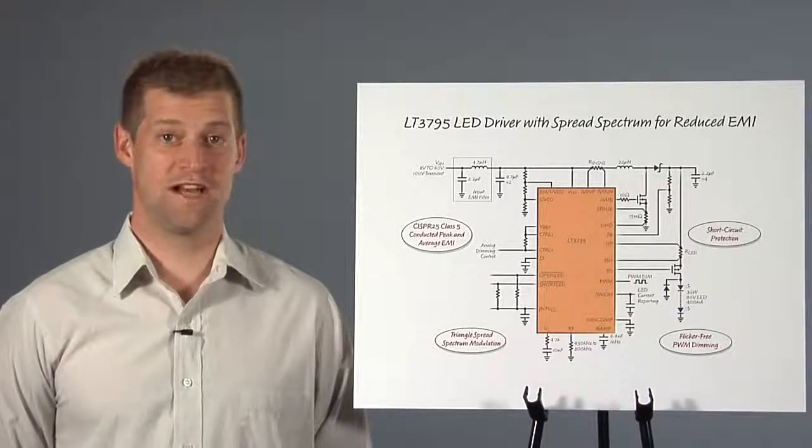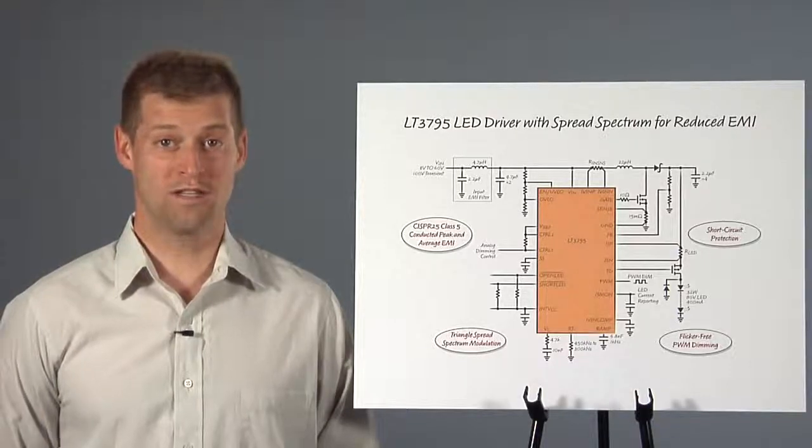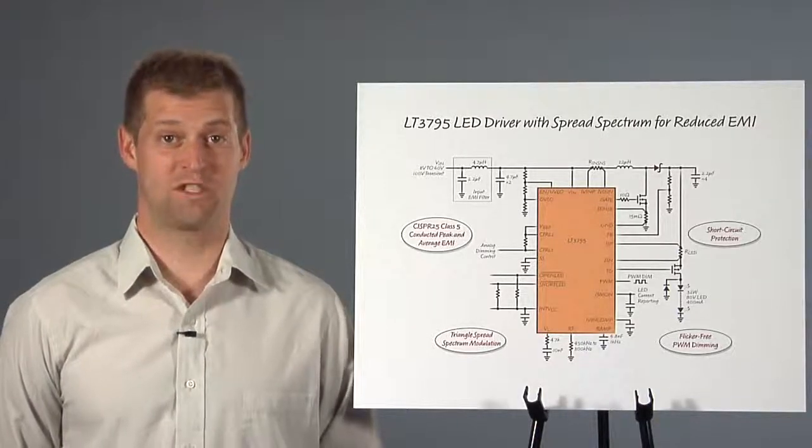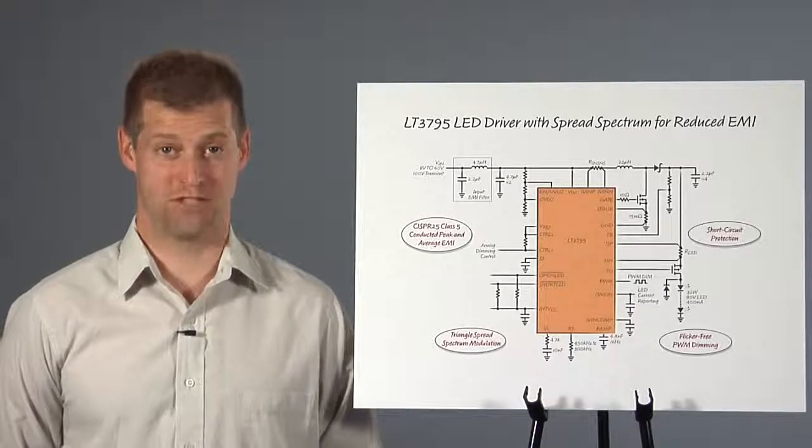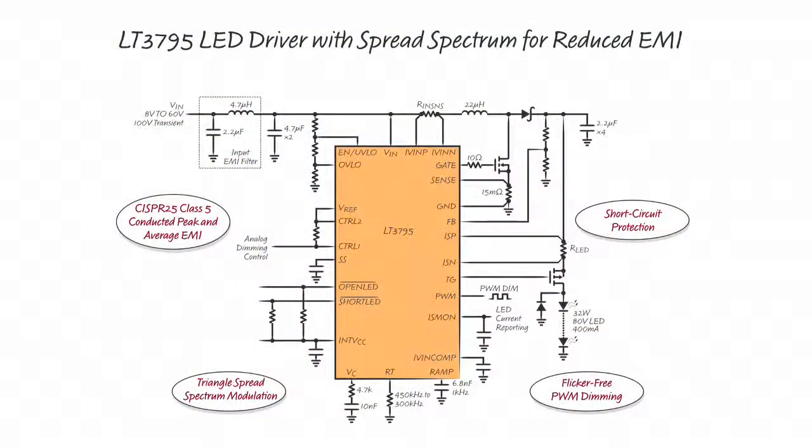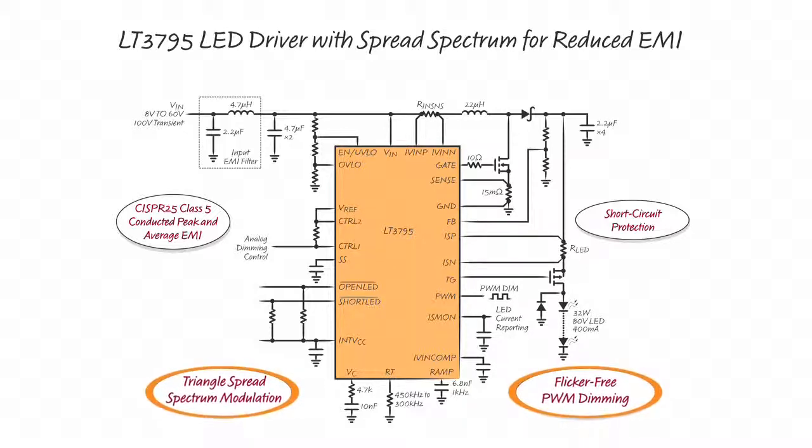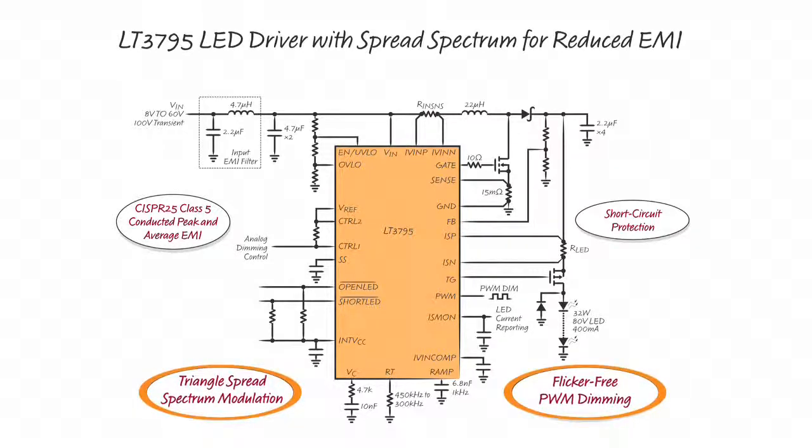The LT3795 is a 110-volt LED driver with spread-spectrum frequency modulation. Here, it is used as a 32-watt boost LED driver for an automotive headlight. It features flicker-free PWM dimming in both spread-spectrum and non-spread-spectrum operation. As a bonus, it even has short-circuit and open-load protection, as well as current monitoring and diagnostic flags.